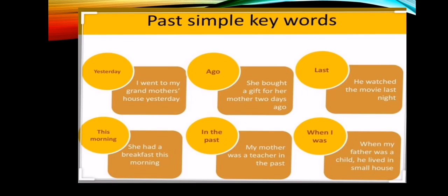Examples with keywords: 'Yesterday' — I went to my grandmother's house yesterday. 'Ago' — She bought a gift for her mother two days ago. 'Last' — He watched the movie last night. 'This morning' — She had breakfast this morning. 'In the past' — My mother was a teacher in the past. 'When I was' — When my father was a child, he lived in a small house.